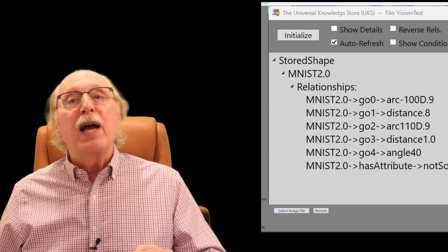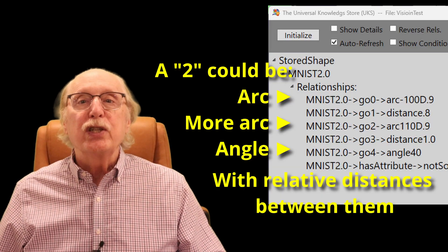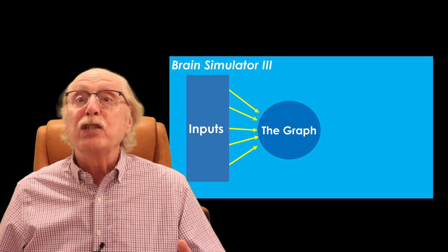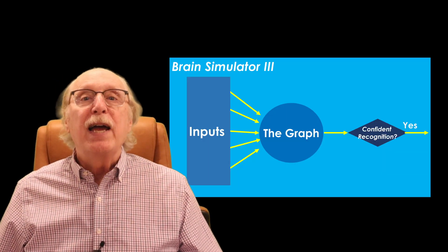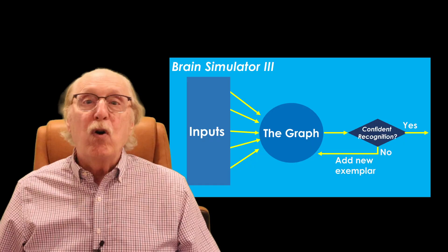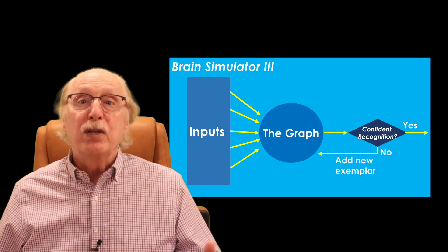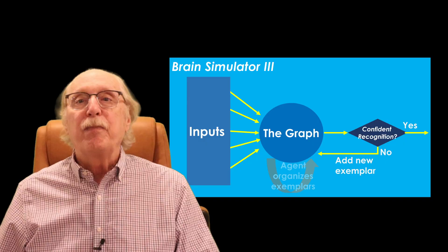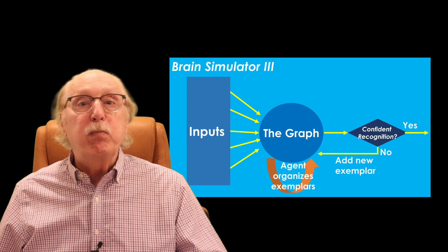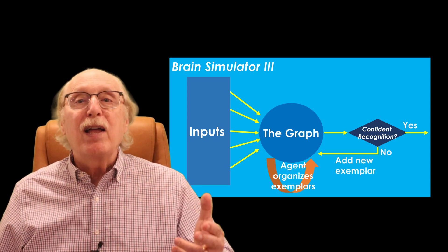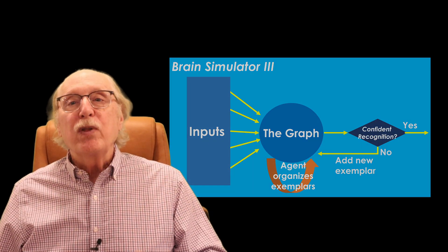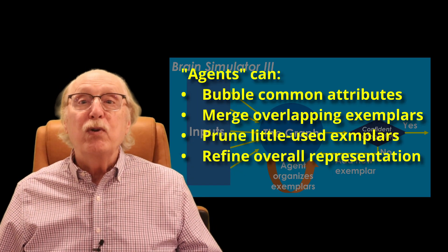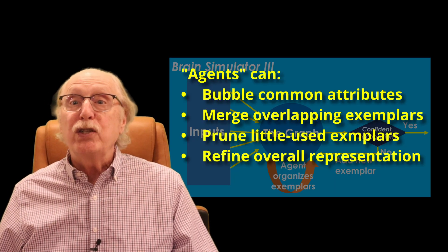How does it manage that? The key lies in the brain's graph structure. In this framework, each digit is linked to a set of visual exemplars. When a new input comes in, the brain looks for the closest match among its stored exemplars. If the match is good enough, the brain treats that input as that version of the digit. If no match exists, or if the brain initially guesses wrong and is corrected, then a new exemplar is stored. A single node representing a digit can have any number of exemplars. Importantly, the system doesn't bloat endlessly — the brain employs internal processes that act like housekeeping staff for the graph structure. They look for common attributes to bubble up, merge overlapping exemplars, prune away rarely used ones, and refine the overall representation so it remains efficient.